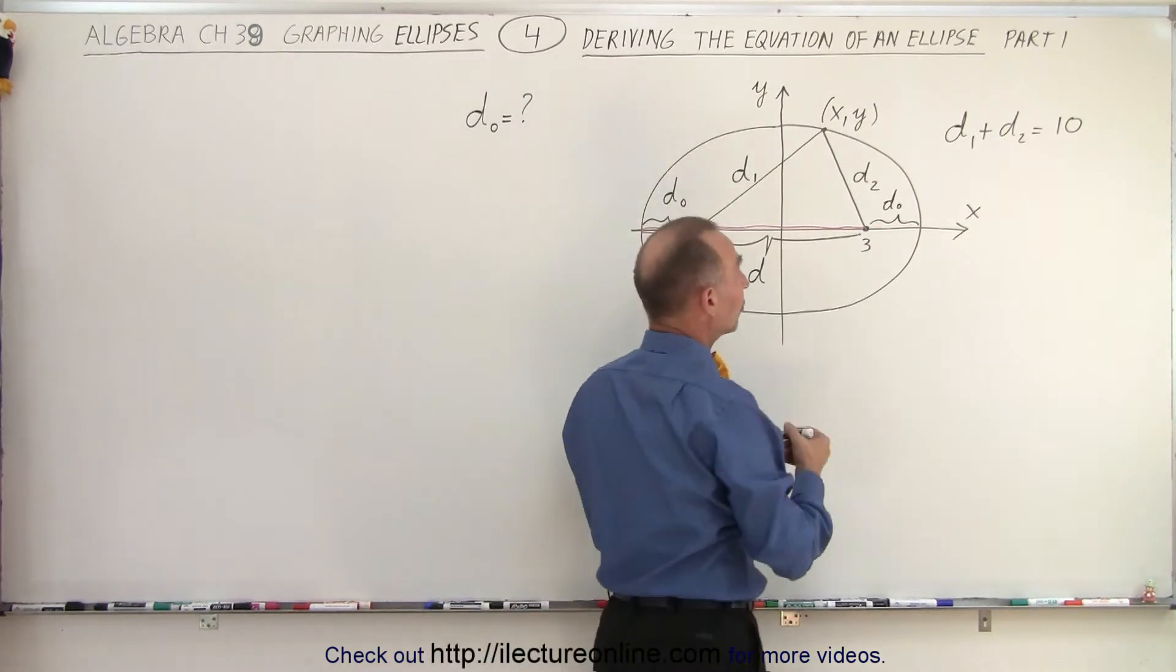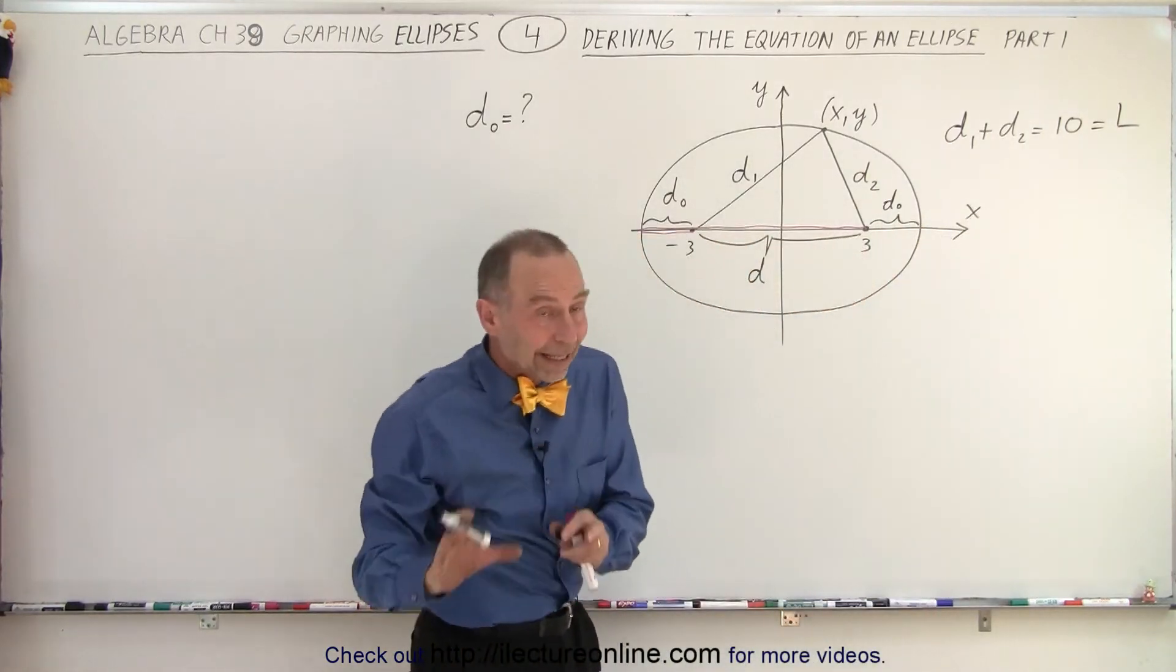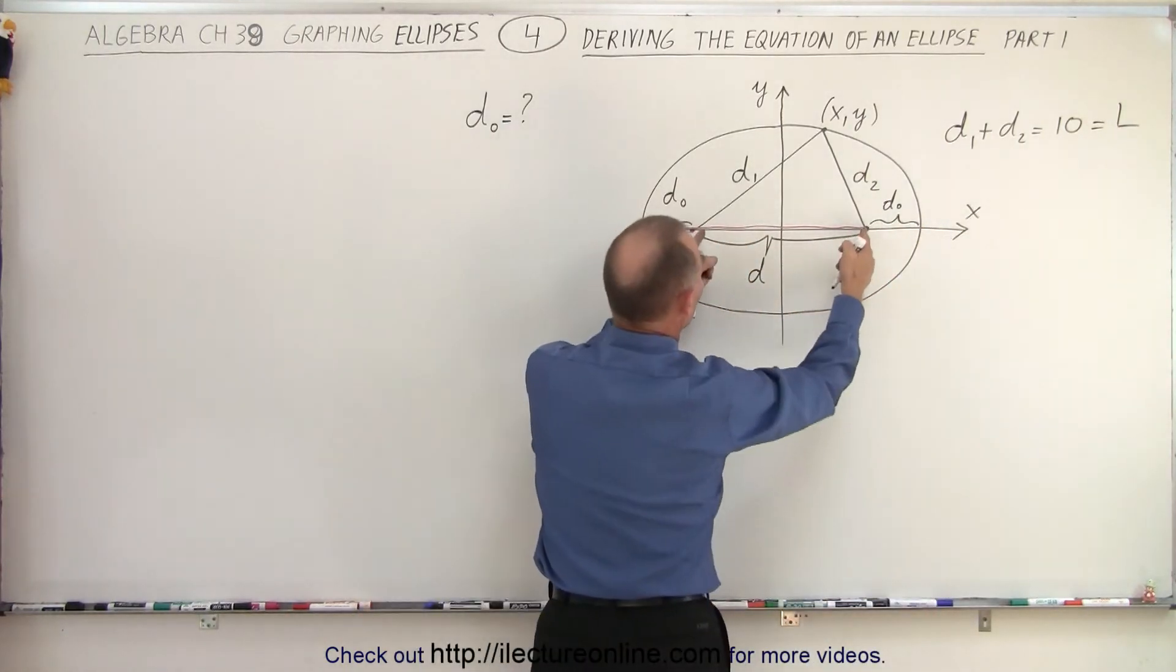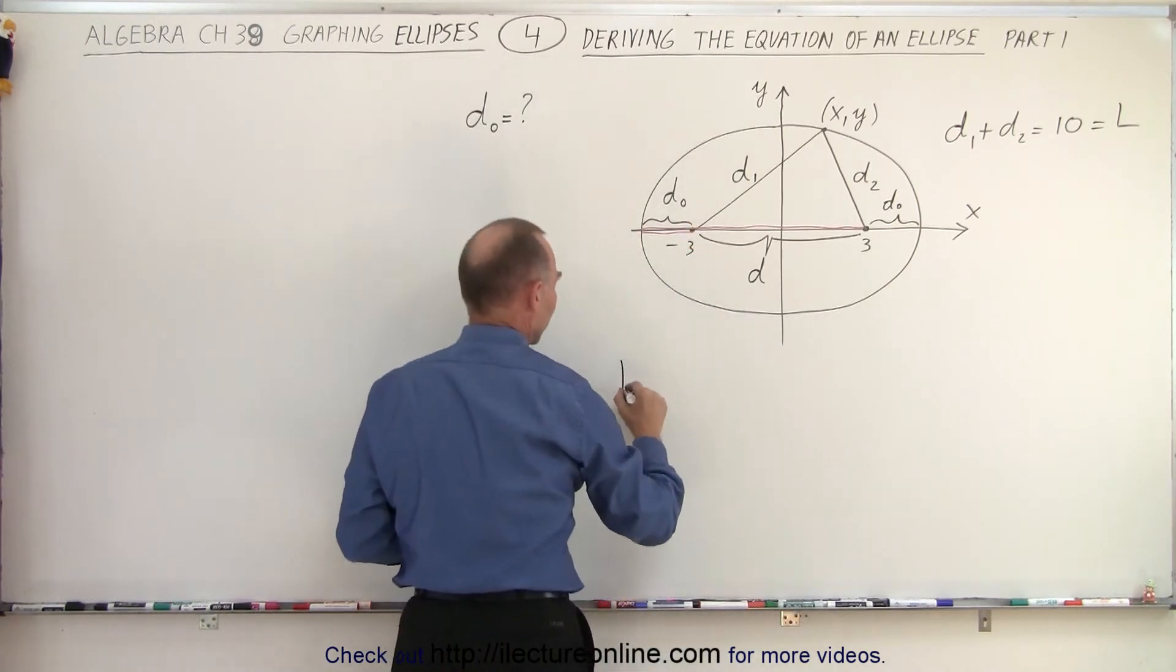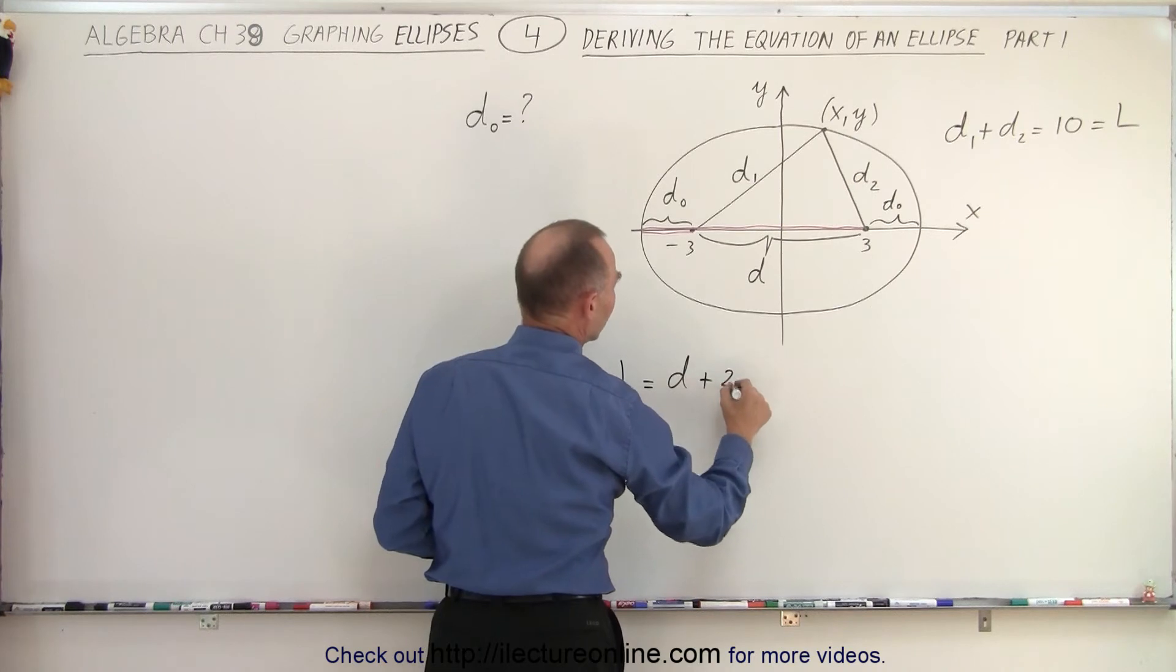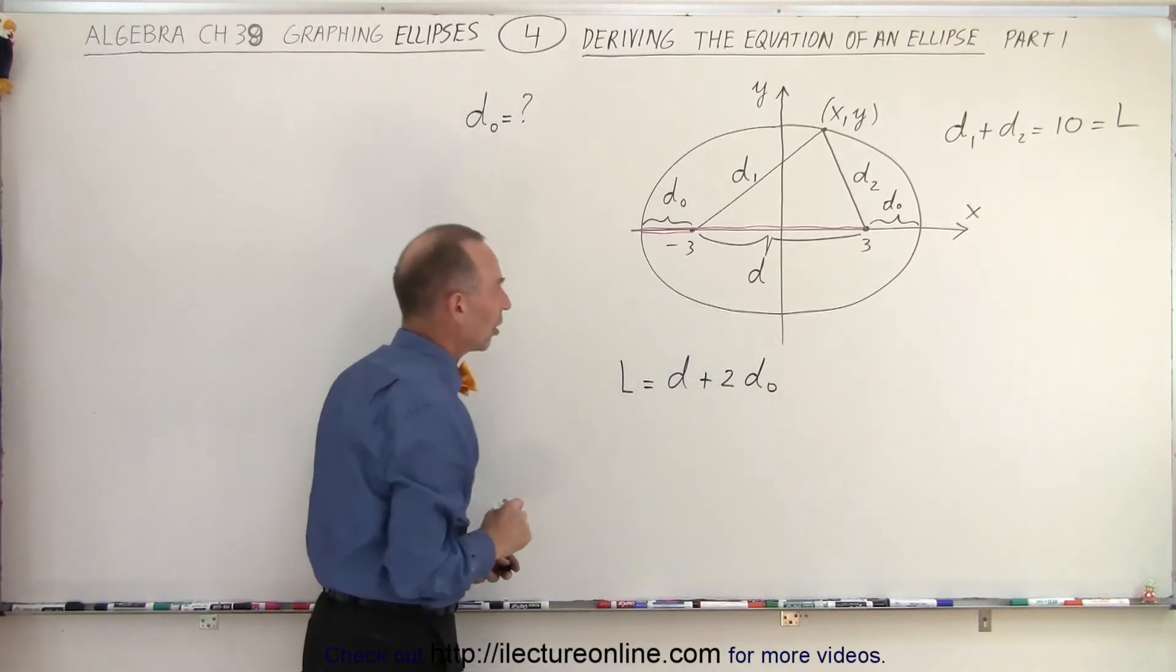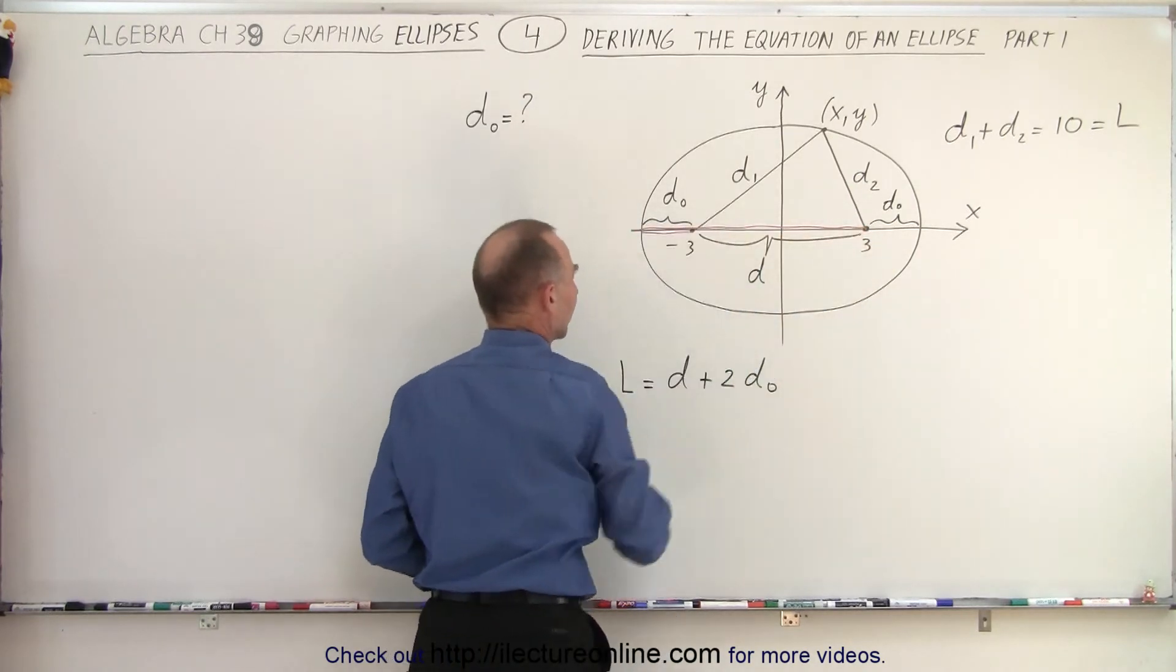Let's call that length. So this could then be considered the length. Then we could say that the length of the string is going to be equal to this distance plus this distance twice. So in other words, l is equal to the distance d plus 2 times the little distance d sub 0. Let's just call it d sub 0 because the string will be all the way from there to the edge and back to here.